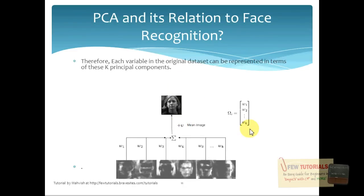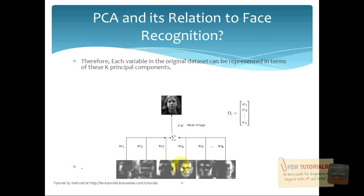Once we have found our selected eigenfaces — the best set that can represent the whole training set of images — each variable in the original dataset can be represented in terms of these K principal components. That is, each image in the training set in face recognition, or the incoming unknown image, can be represented as a linear combination, or a weighted sum, of these eigenfaces. You see these weights w1, w2, and so on up to wK — these are the linear weighted sum of these eigenfaces. Each image is contributing some features to the training set data.